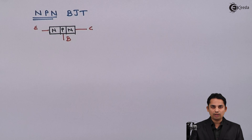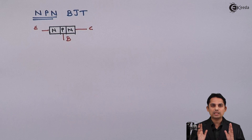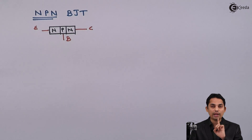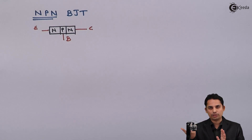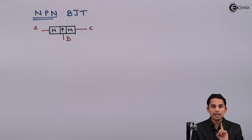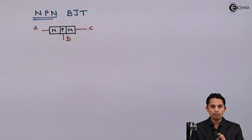In a BJT, the emitter will have medium width whereas the collector will have maximum width. The reason is that, as the name suggests, the collector is going to collect all the majority carriers, so it requires more area. Whereas the emitter emits all the electrons away from the junction, so it does not require maximum area but requires at least medium width. Hence emitter has medium width and collector has maximum width.